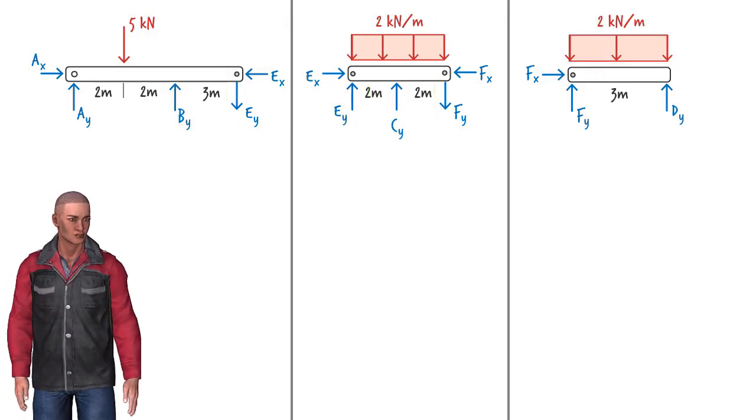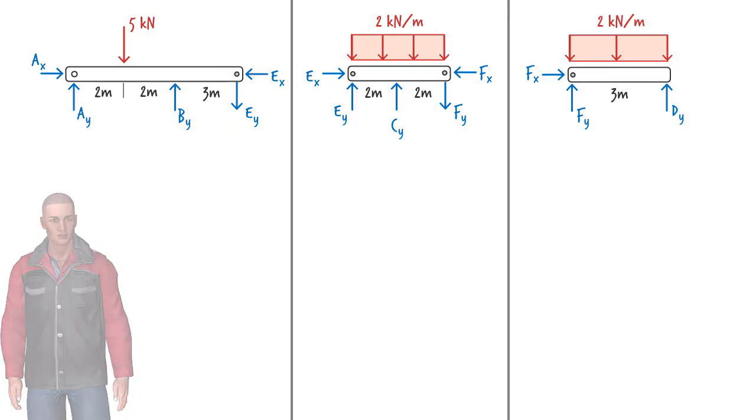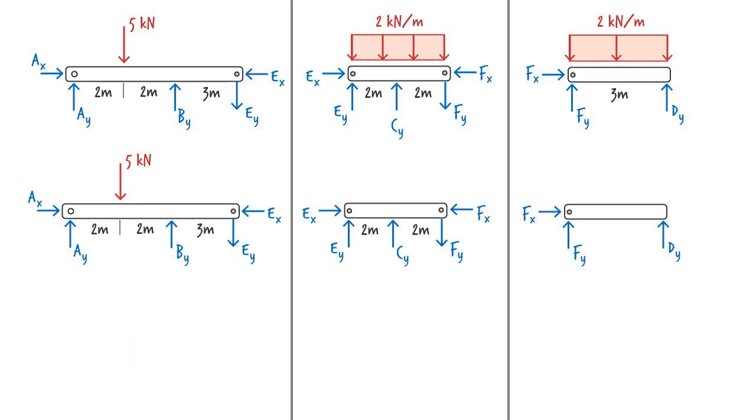For the purpose of calculating support reactions in beams, we can always replace distributed loads with their equivalent concentrated loads. Here we have two rectangular loads. We replace each with its equivalent concentrated load. The magnitude of each load equals the area of the rectangle, and the location of the force is at the geometric center of the rectangle.